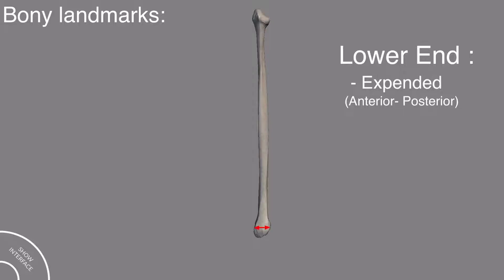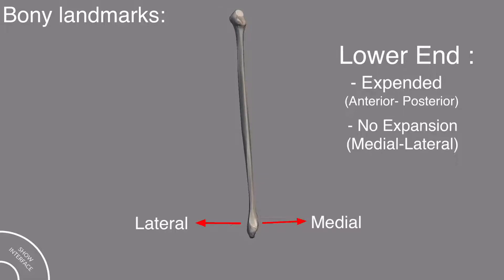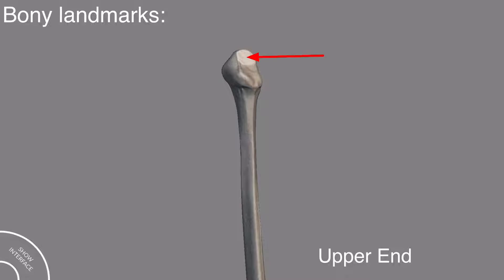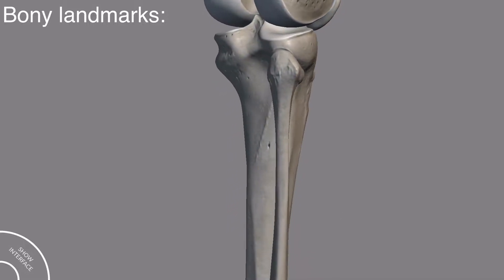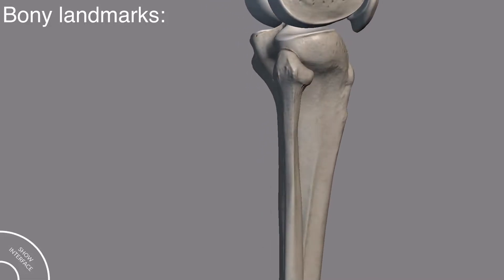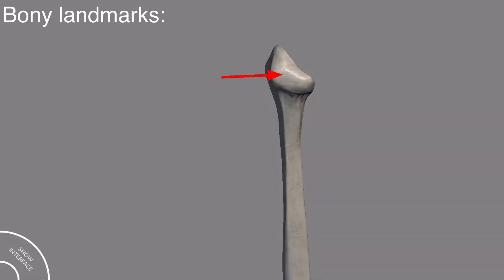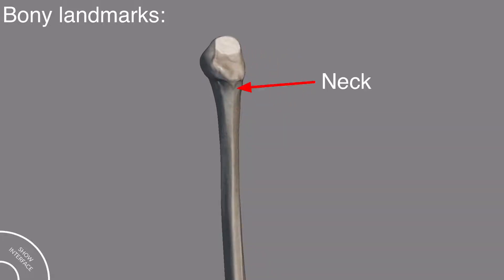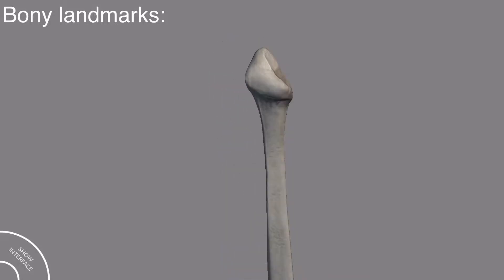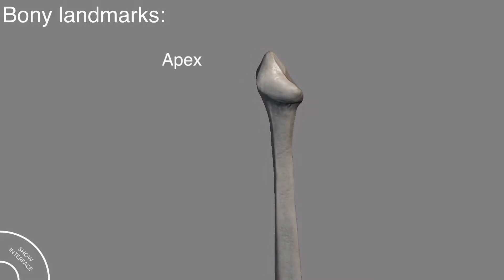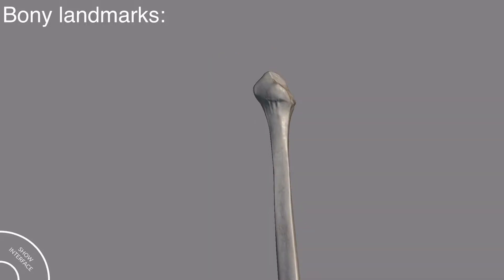As you can see, the lower end is expanded in the anterior and posterior position but is not as much expanded in the mediolateral direction. In the upper end, this is the articular facet for the tibia bone, and through this it articulates with the lateral condyle of the tibia bone. This is the head of the fibula bone, the neck of the fibula bone, and one more important bony landmark — the apex of the fibula bone.